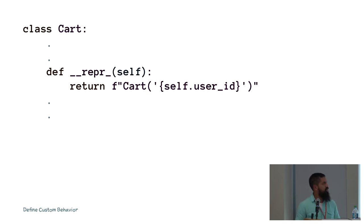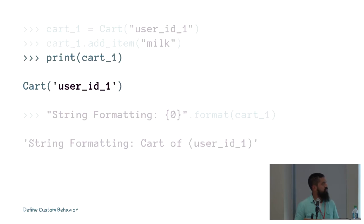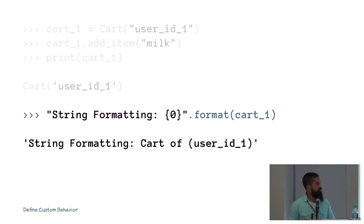Here we see a simple dunder repr where we return the name of the class along with the user ID used to instantiate that object. Now when we print out the same object, we have a little more detail — the name of the class along with the user ID of one. You can also use the object in string formatting. In this case, Python is looking for dunder str and, because it's not finding it, falls back to the implementation of dunder repr.